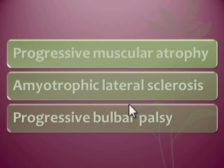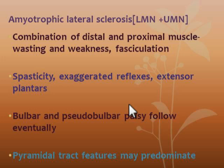Motor neuron disease is classified into three types: progressive muscular atrophy, amyotrophic lateral sclerosis, and progressive bulbar palsy. In some textbooks primary lateral sclerosis is also given. Amyotrophic lateral sclerosis involves a combination of lower motor neuron and upper motor neuron lesions. There is distal and proximal muscle wasting, weakness, and fasciculation — signs of lower motor neuron — along with spasticity, exaggerated reflexes, and extensor plantar response — signs of upper motor neuron — mixed together.